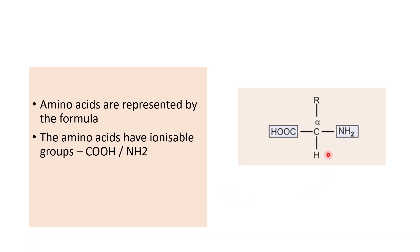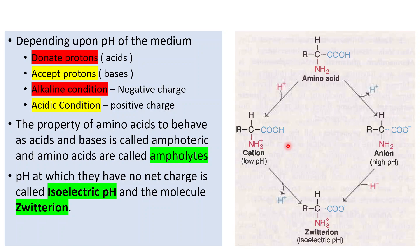This formula consists of an alpha carbon, to which the amino group and a carboxyl group are attached. Both this amino and carboxyl group are ionizable groups, so they can have charge depending upon the pH of the medium. This is the alpha carbon, this is the carboxyl group, and this is the amino group.